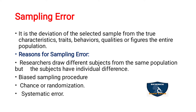Reasons for sampling error: Researchers draw different subjects from the same population, but every individual is different — each has their own individual difference. So no matter how consciously you select from the same population, the subjects differ personally, and because of this individual difference there may be chances of sampling error.